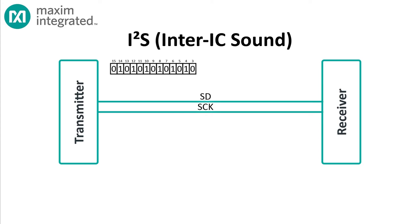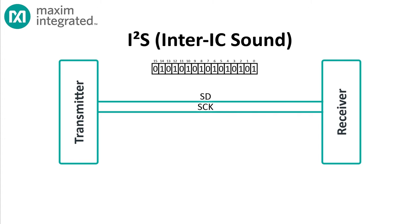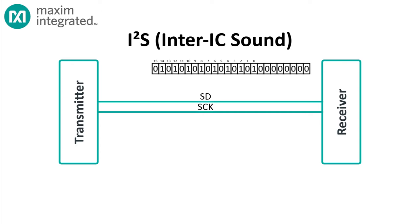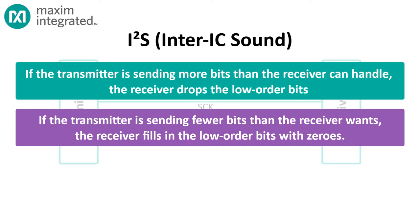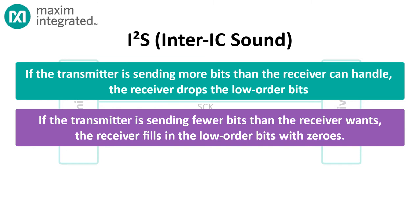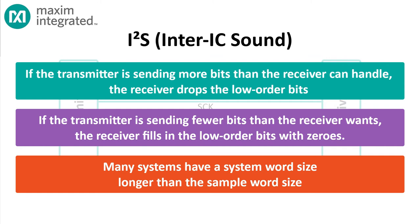But what if the situation is reversed? The transmitter is sending 16 bits per sample, but the receiver can accept 24 bits? The receiver accepts the 16 bits, but when it sees the end-of-sample marker, it just fills in the rest — the low-order 8 bits — with zero values. Once again, the transmitter is providing the highest quality signal it can, and the receiver is interpreting the signal as best it can. So the rule is: if the transmitter is sending more bits per sample than the receiver can use, the receiver just drops the low-order bits it doesn't need. And if the transmitter is sending fewer bits than the receiver wants, the receiver just fills in the low-order bits with zero. Since everything is transmitted most significant bit first, adjusting for word length is really easy. In real-world I2S systems, it's not unusual to see the system's sample size set to 24 or 32 bits, but to send samples with only 16 significant bits.